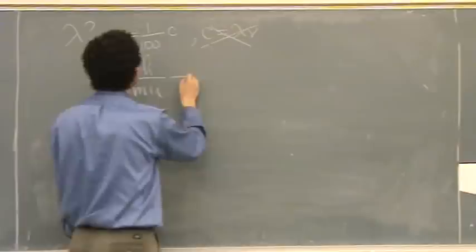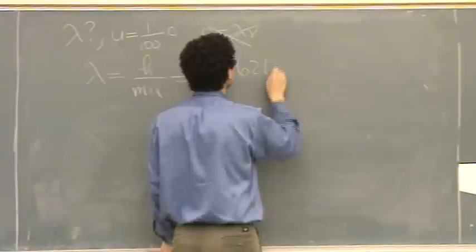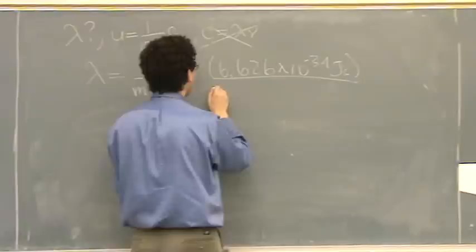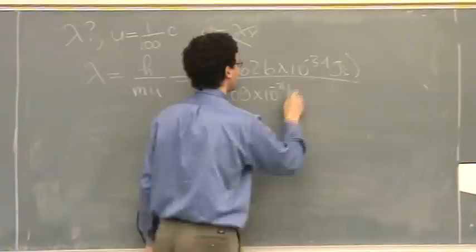So here, lambda is H, 6.626 times 10 to the minus 34 joule seconds. And M, is this an electron? Yeah. It's an electron. So you look on the back of the test for the mass of the electron.